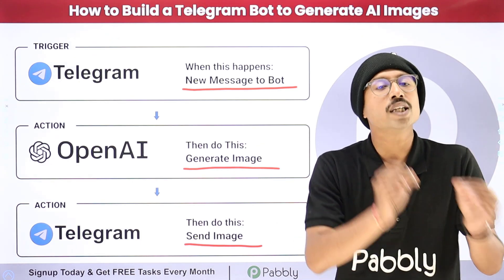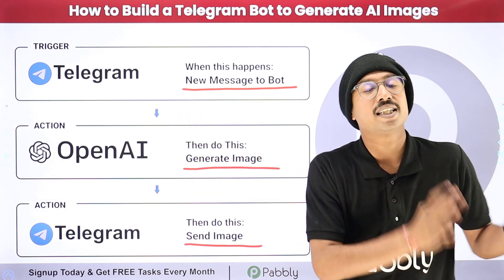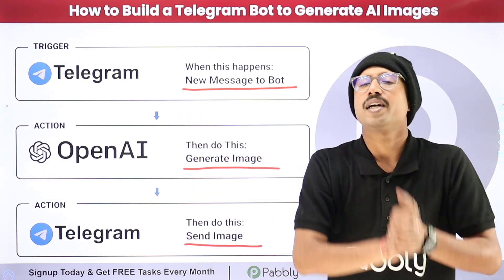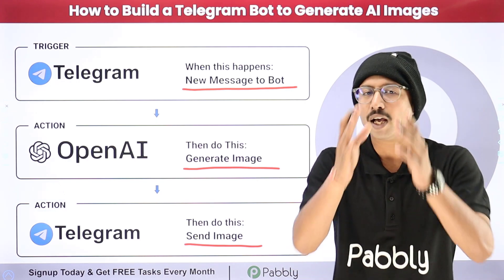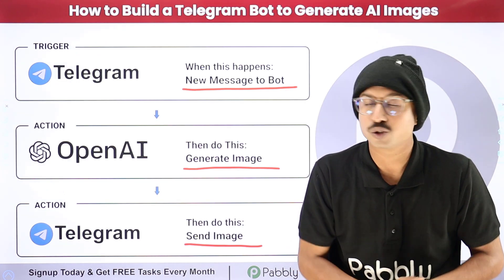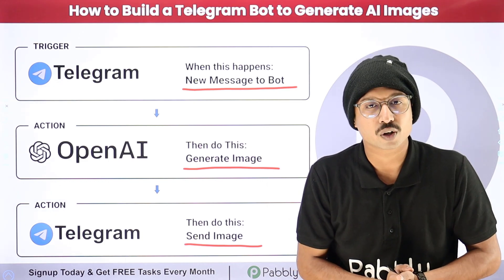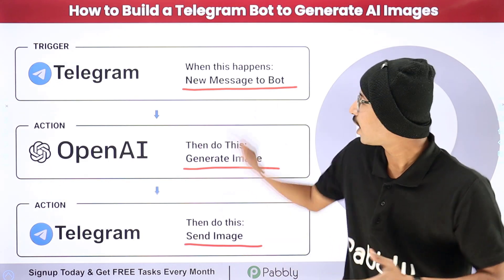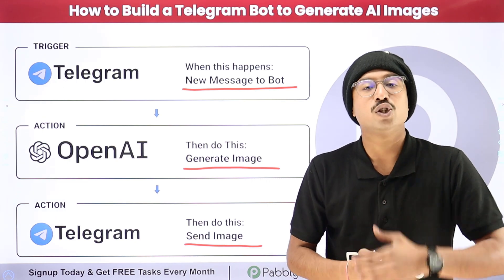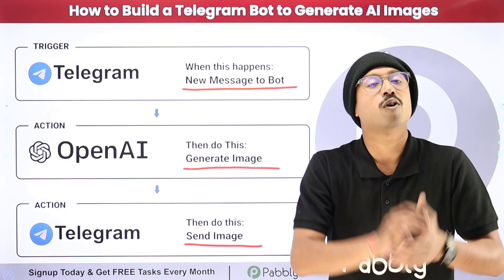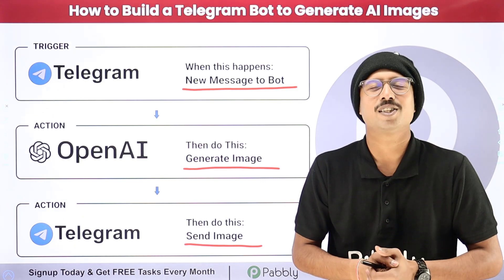In this video we are taking the example of OpenAI's DALL-E as an AI image generation platform. But instead of this, you can use Google Gemini, Leonardo AI, or any other AI image generation tool and use it with this Telegram bot to create the automation. If you want to learn how to create this kind of Telegram bot using Pabbly Connect, just come with me to my screen.